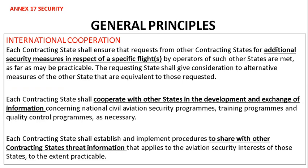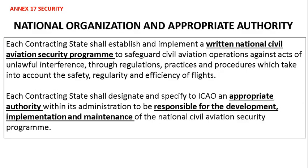The requesting state shall give consideration to alternative measures of the other state that are equivalent to those requested. Each contracting state shall cooperate with other states in the development and exchange of information concerning national civil aviation security programs, training programs, and quality control programs. Each contracting state shall establish and implement procedures to share threat information with other contracting states that applies to their aviation security interests.